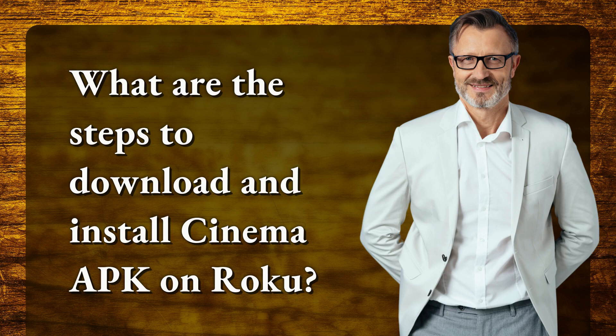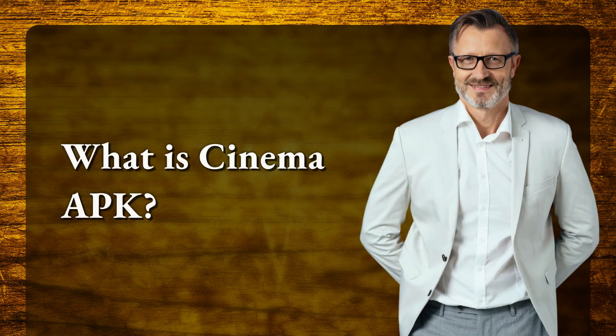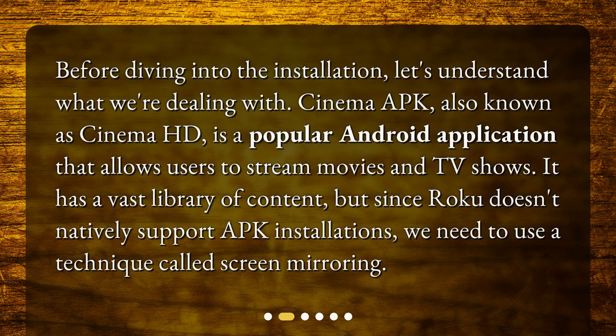Today we're diving into a popular query: how to download and install Cinema APK on Roku. While Roku doesn't natively support Android APKs, we've got a workaround. Cinema APK, also known as Cinema HD, is a popular Android application that allows users to stream movies and TV shows. Since Roku doesn't natively support APK installations, we need to use a technique called screen mirroring.